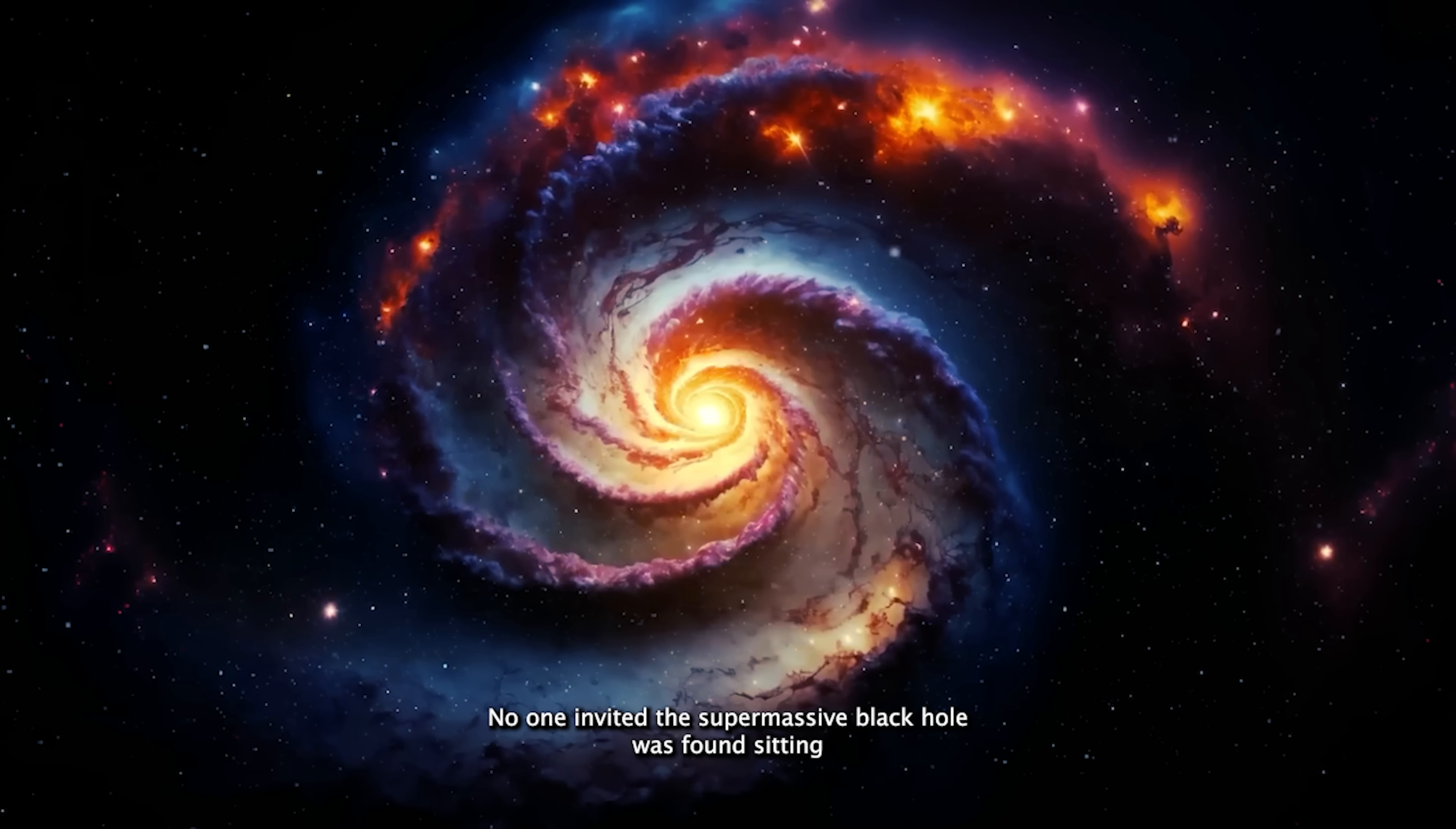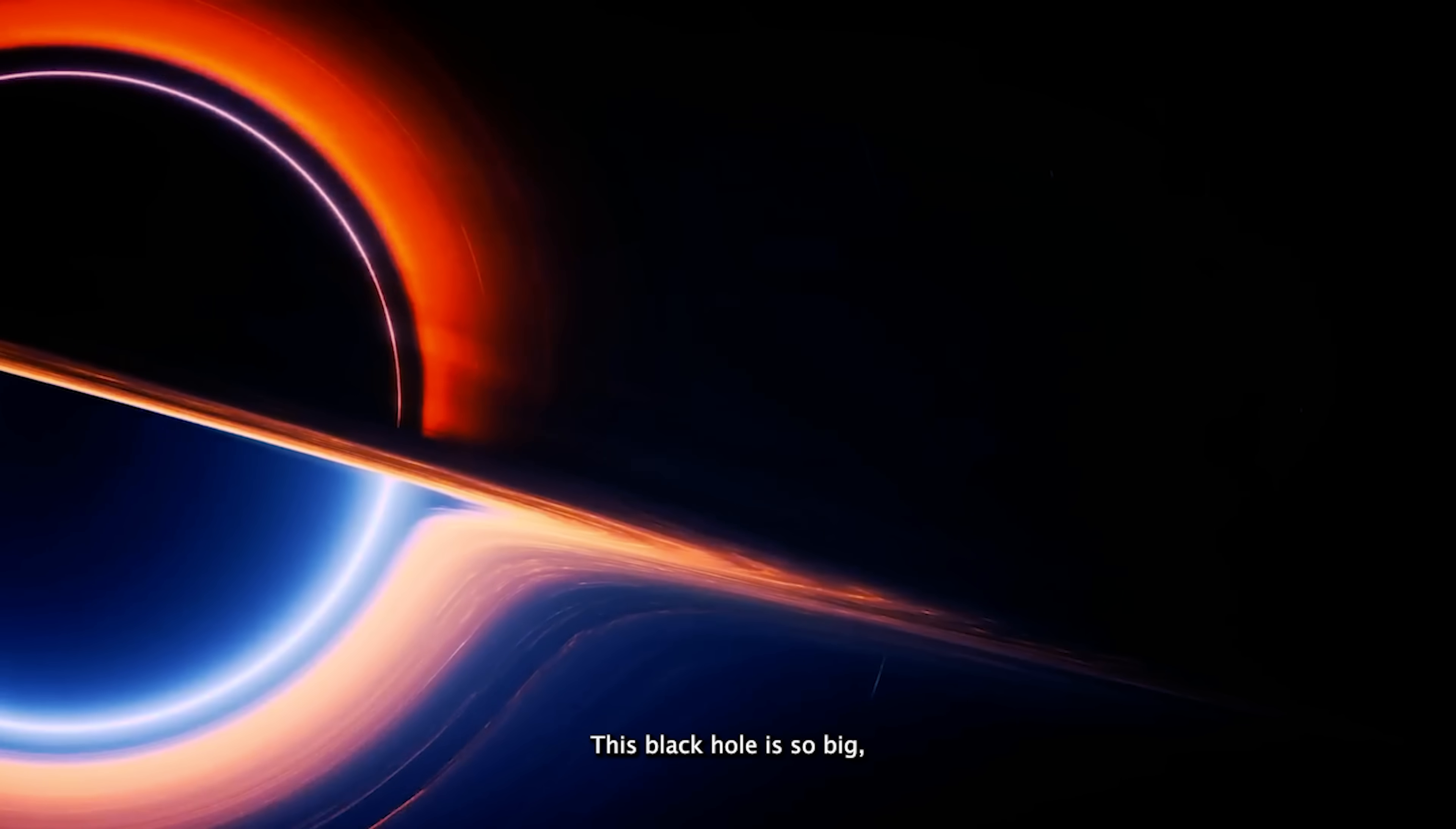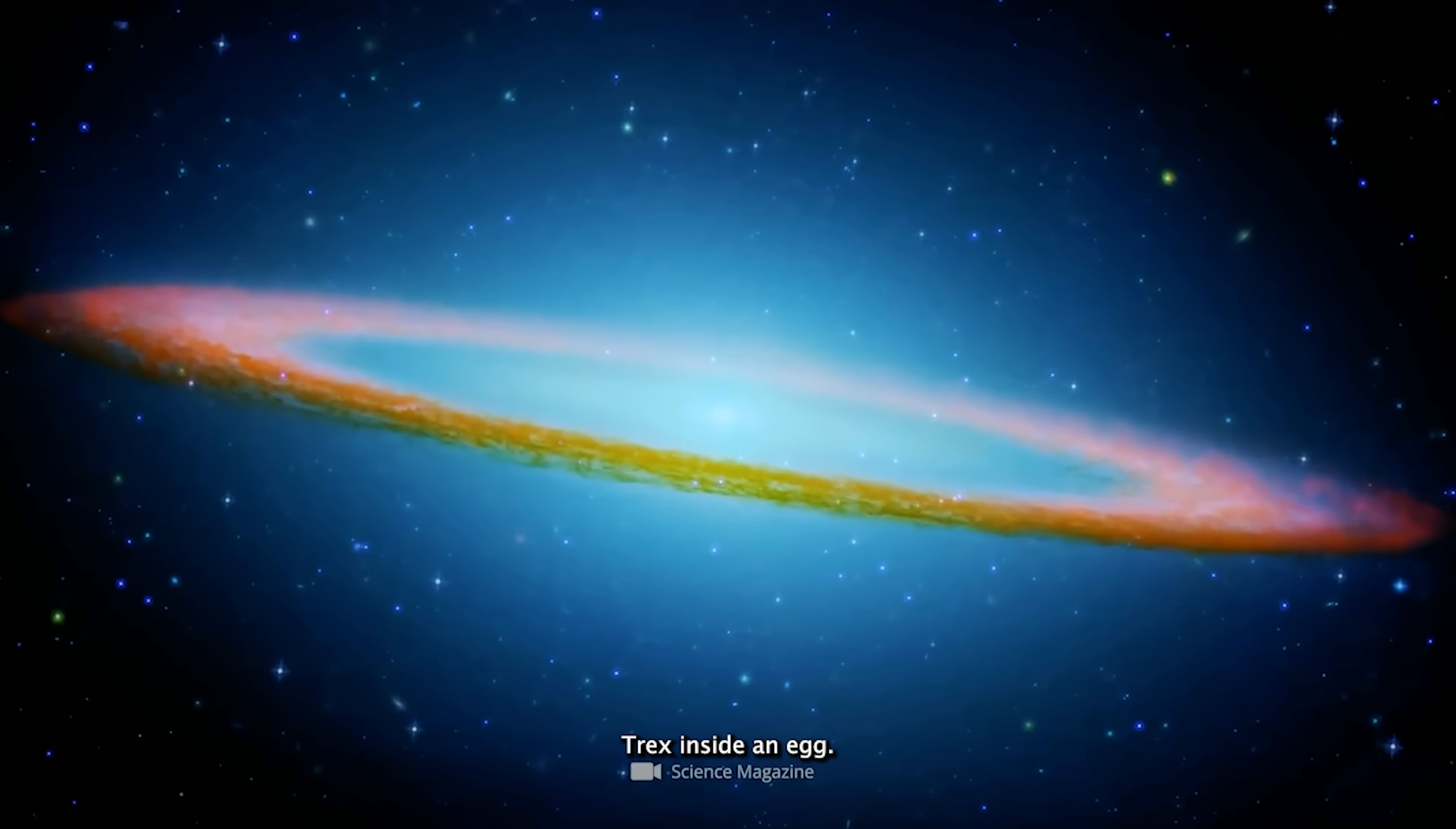The supermassive black hole was found sitting comfortably in the heart of a baby galaxy called EG-SY-8P7, part of the Webb project hilariously named SEARS. But here's the twist. This black hole is so big it breaks every scientific rule in the book. With the weight of about 10 million suns and a time stamp of just 570 million years after the Big Bang, this thing is a full-on cosmic anomaly. According to our models, it's the equivalent of finding a full-grown T-Rex inside an egg.